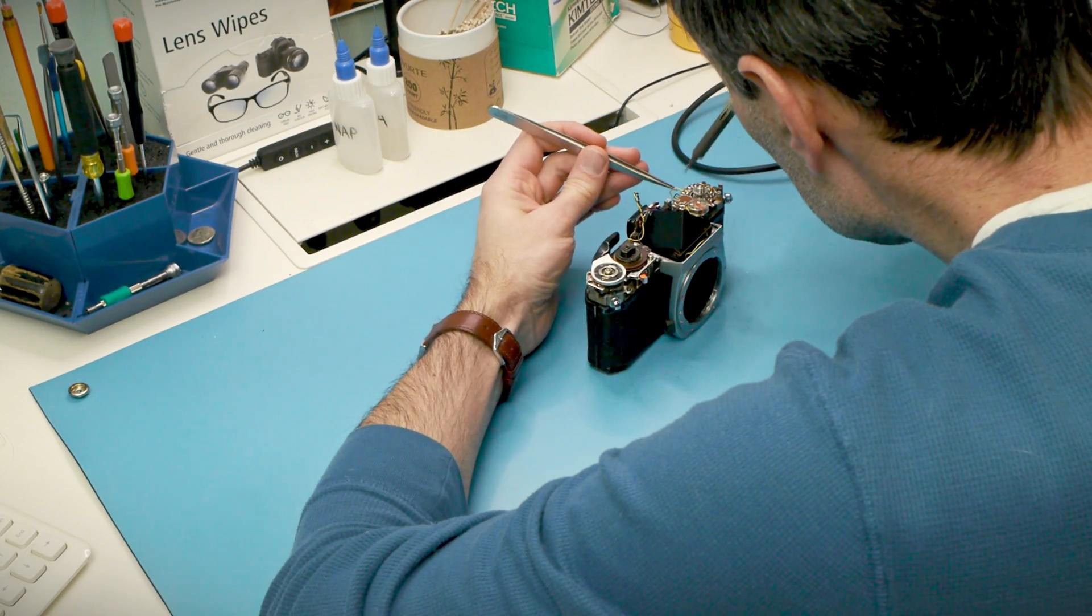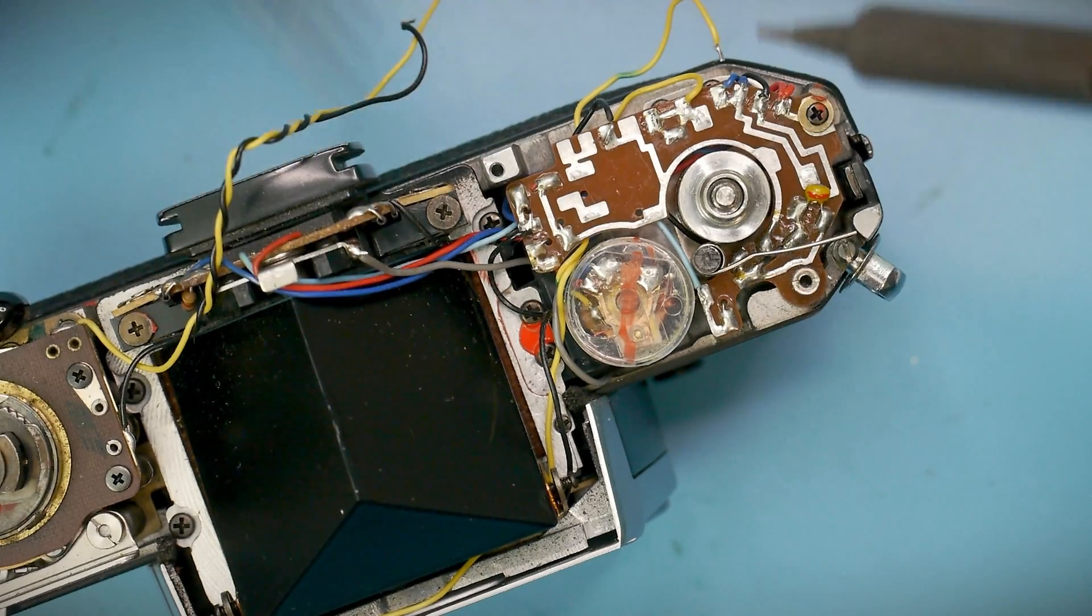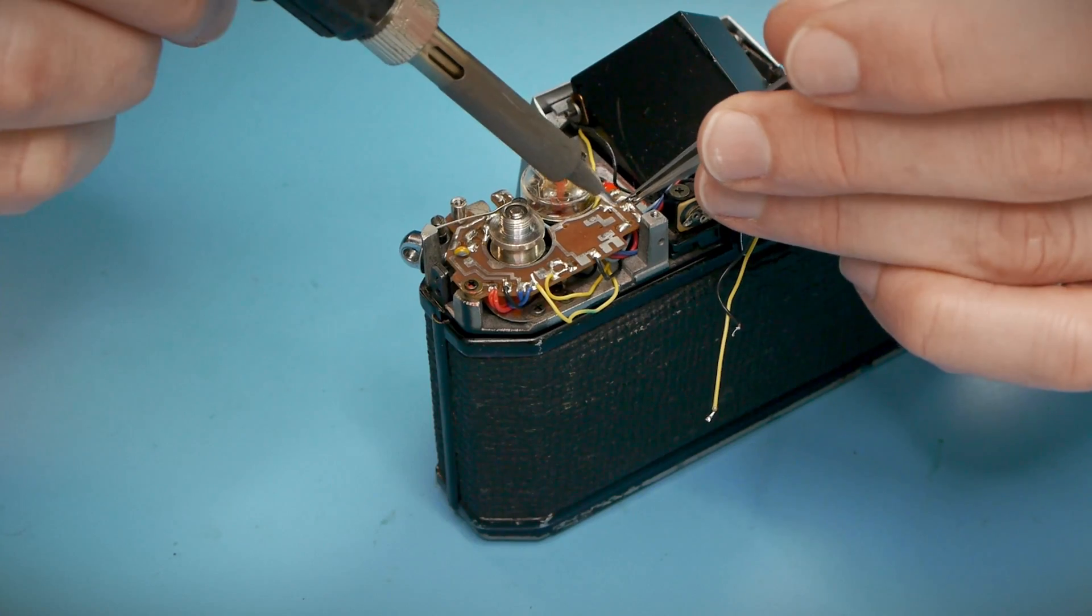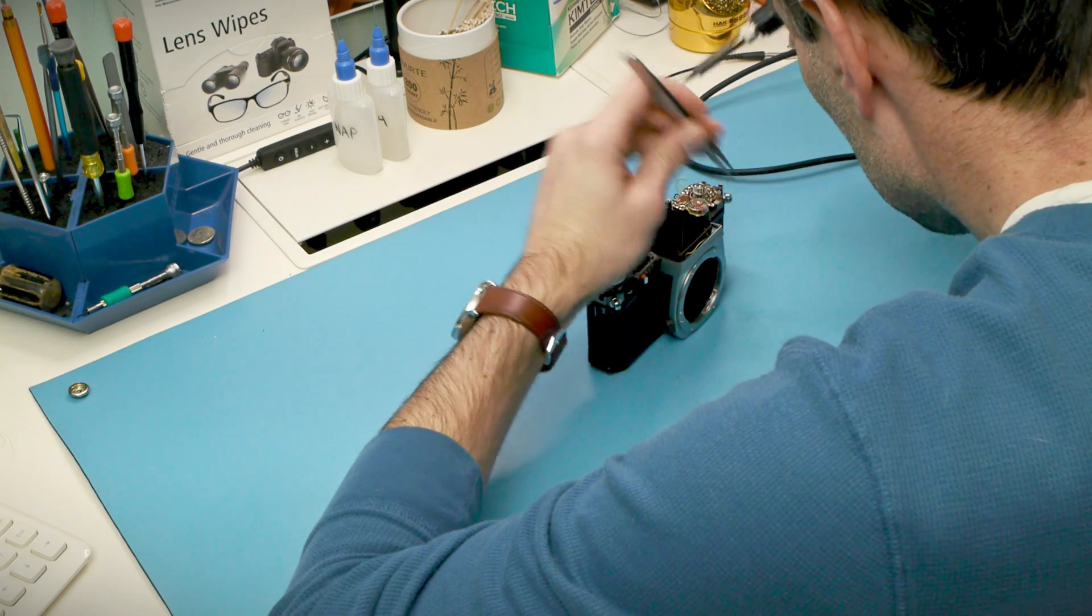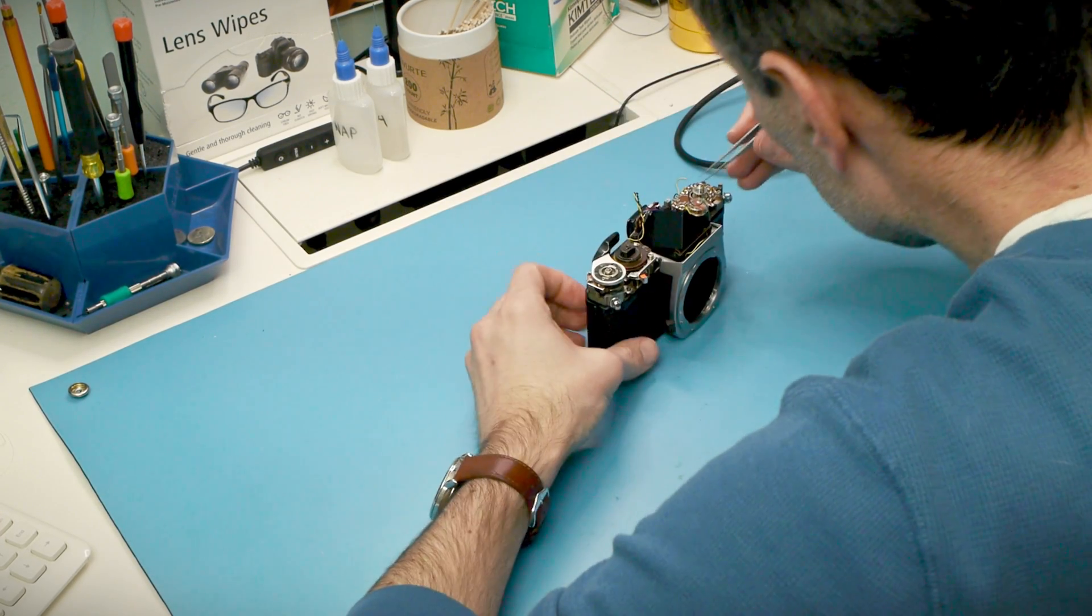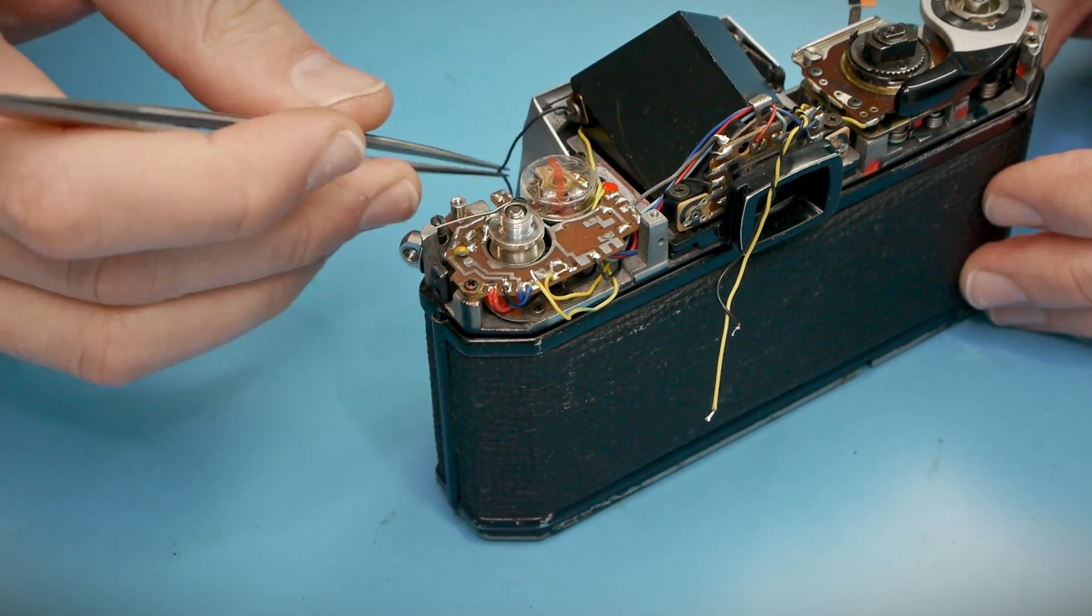One thing to know about the K1000 is that it was manufactured over quite a long period of time, about 20 years. And over that time it was made in different factories and even with different parts. And the PCB is one of those parts that changed the most over the years.